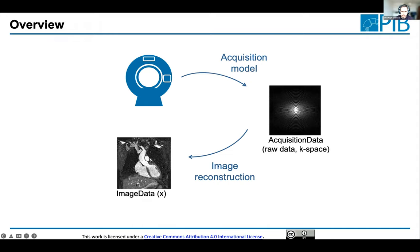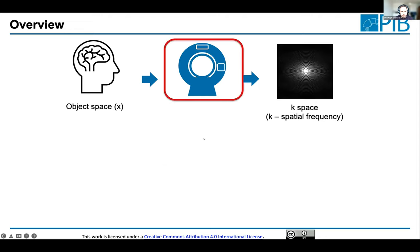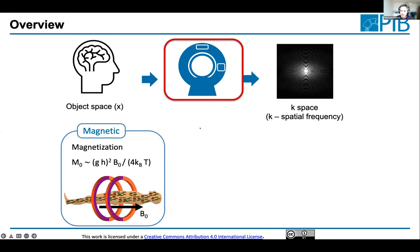You can see a standard T1-weighted image of the heart. The scanner is one big magnet — that's essentially what most of the hardware in there is. We have different field strengths: 1.5 Tesla or 3 Tesla are the common clinical field strengths, with 7 Tesla also available and now CE-labeled for brain imaging. There's also a trend toward lower field strengths, like 0.5 Tesla or even lower, to make MRI available to more people.